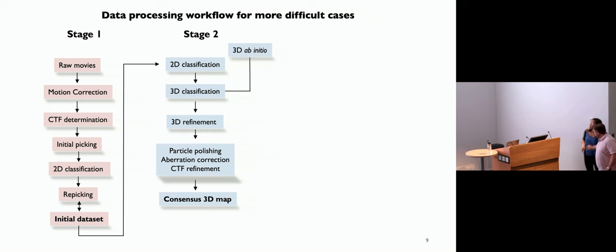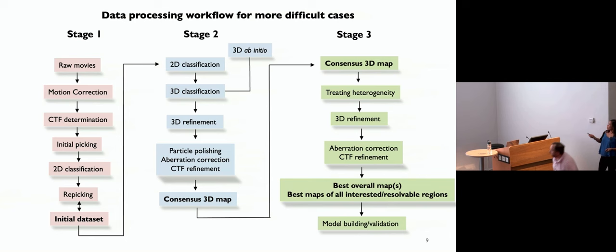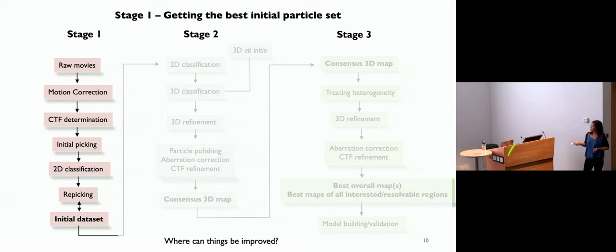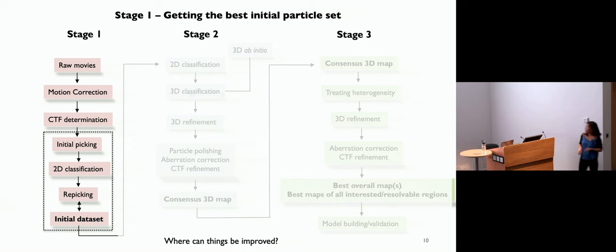But for many of us, this is where the fun starts — treating heterogeneity, getting the best overall maps, as well as the best maps of all regions of interest that allow you to address biological questions. Then you do model building, which Paul will talk about later today. So the first part is stage one: getting the initial data set. It sounds pretty trivial — just do all of these and pick particles — but this is where things can improve significantly. Where can you improve things here?